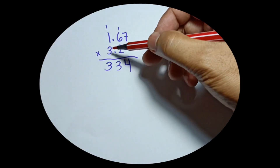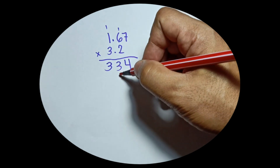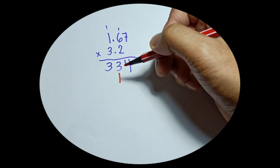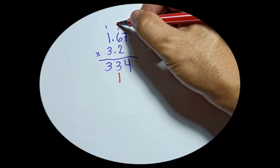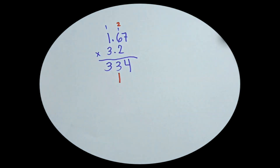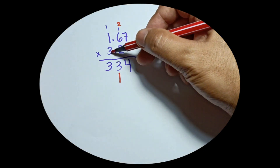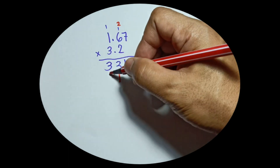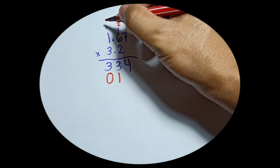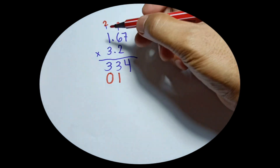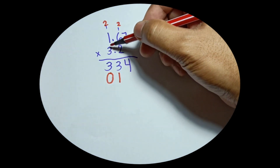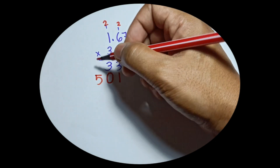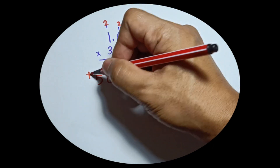3 times 7 is 21, so put your answer on the second line and carry 2 on top of 6. Then 3 times 6 is 18 plus 2 is 20, so write 0 and carry 2 on top of 1. Then 3 times 1 is 3 plus 2 is 5. Now you have to add them all.